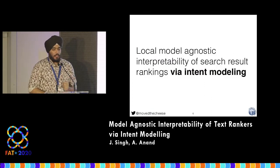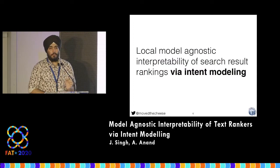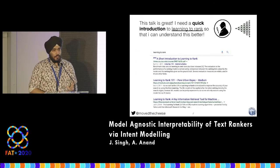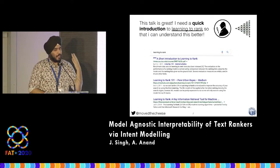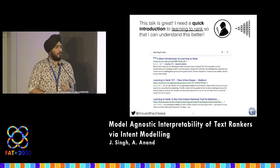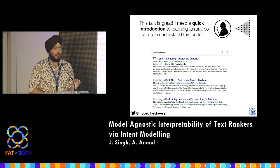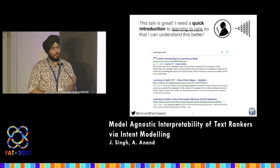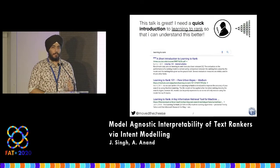The last part of the paper title talks about intent modeling. In information retrieval, there's the concept of a search intent. When we go to a search engine, we usually have an information need in our head which is quite expressive — for example, wanting a quick introduction to learning to rank and understanding it better. But when you actually go to a search engine, you just type in 'learning to rank.' So the heavy lifting falls on the ranking model to determine what you really need, what is relevant and what isn't. This is what makes these models complex, and why they need a lot of data to figure out these patterns.